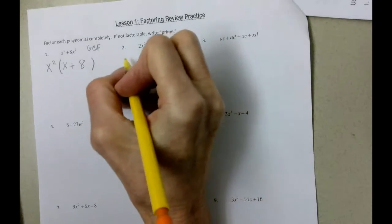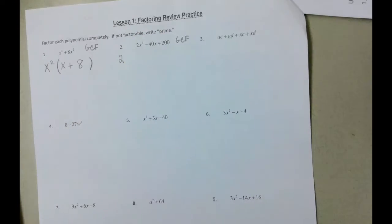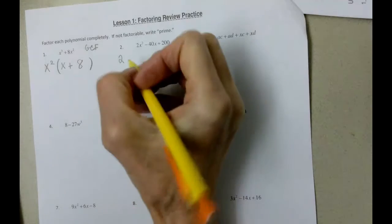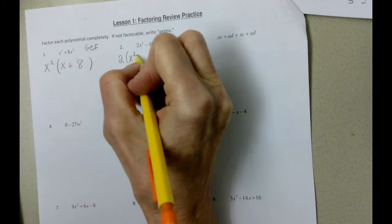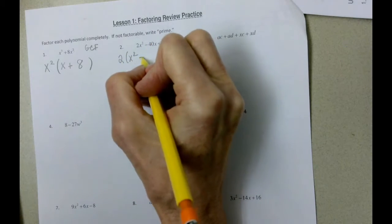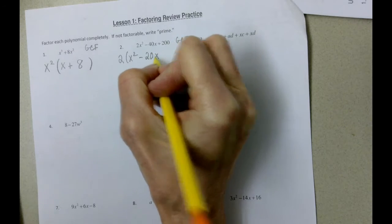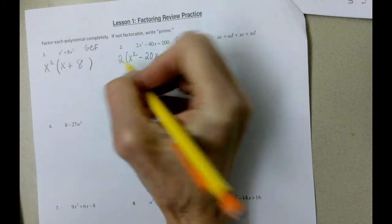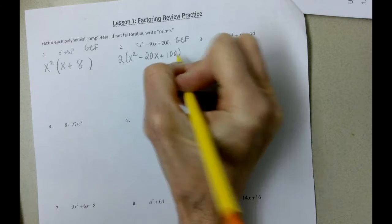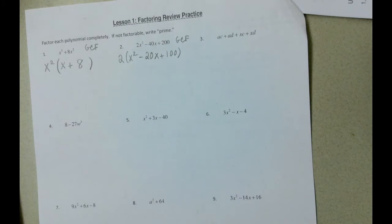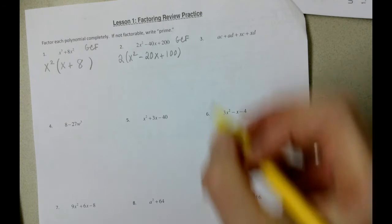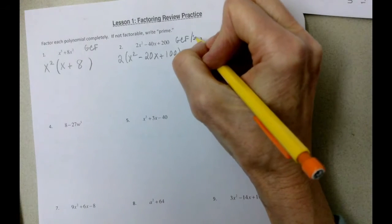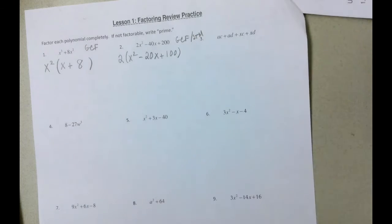We can factor out a two. So we've got a greatest common factor, at least for starters. So if we factor out a two, two divided by two is one x squared. Forty divided by two is twenty x. And 200 divided by two is one hundred. Well, not only do we need to do greatest common factor, but it turns out that we can also do split the middle.